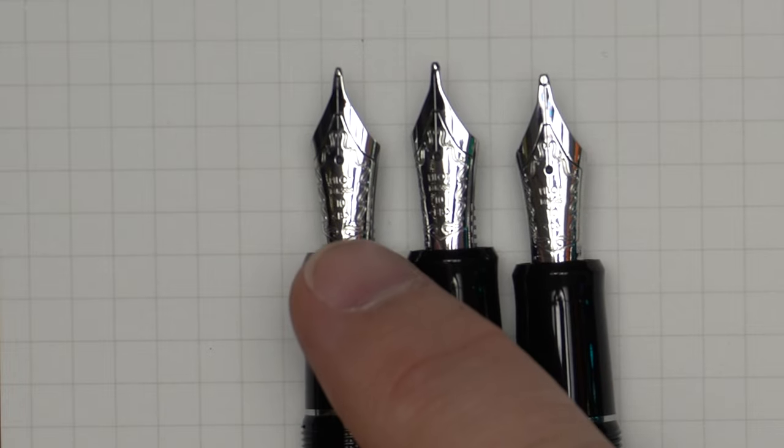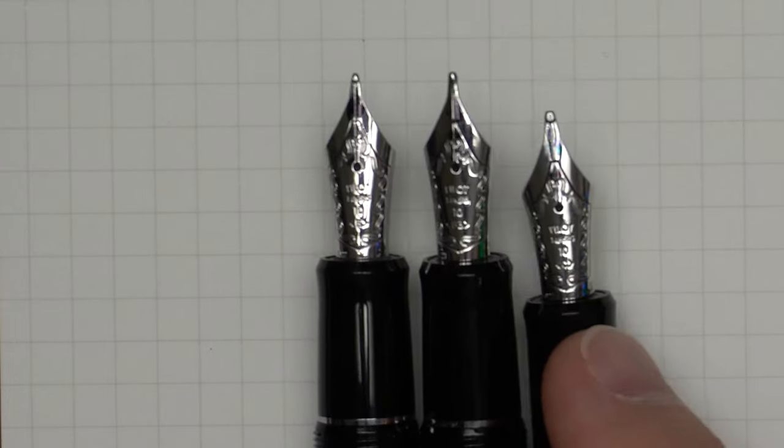You can see they are all 14-karat gold nibs. They're all rhodium-plated. They're all number 10s, and they're all marked broad, double broad, or C, respectively.